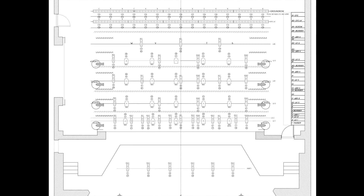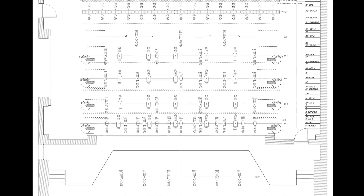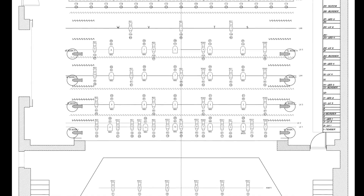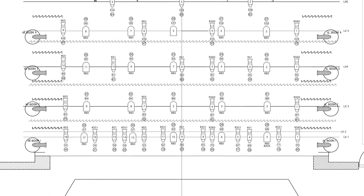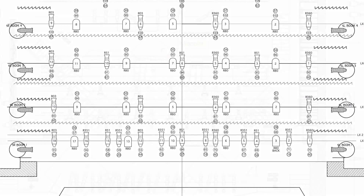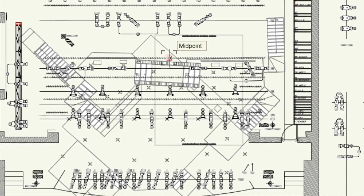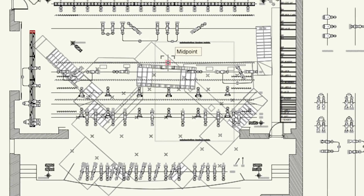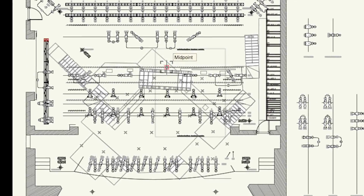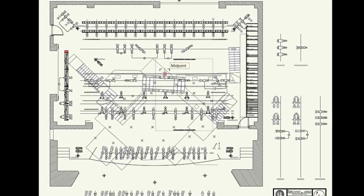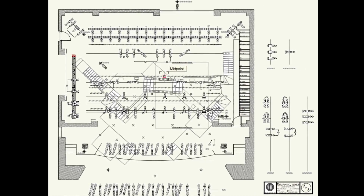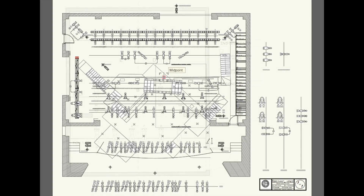A light plot is a complex drafting created by the lighting designer in order to communicate all of the information about the lighting design. This includes information like lighting placement, color, control, circuiting, and more. Without an understanding of the common practices used to create a lighting plot, it can be incredibly confusing for the beginner to look at it. The following video gives you the information needed to understand exactly how to read and interpret a light plot.